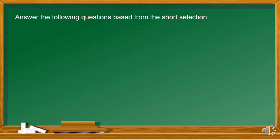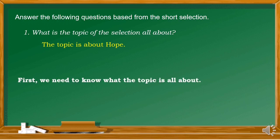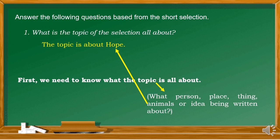Answer the following questions based on the short selection. For question number one, what is the topic of the selection all about? The topic is about Hope. When we say topic, it refers to a person, a place, thing, animals, or idea being written or talked about.